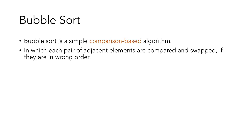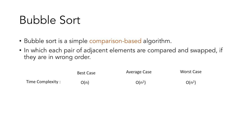The time complexity of bubble sort in the best case is O(n), i.e., when the array is already sorted, and in the average and worst case the complexity is O(n²), with a space complexity of O(1).